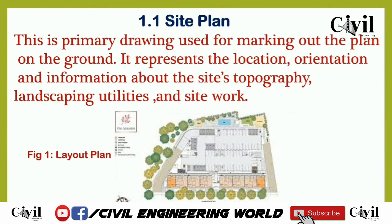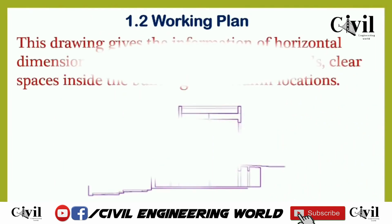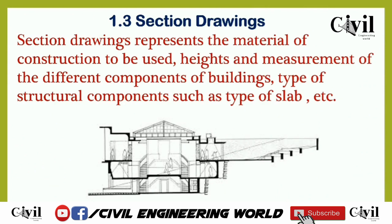There are various sub-types of architectural drawing. The first is the site plan, which is used to represent and locate the project and also gives information about topography and other utilities. The second is the working plan, which gives us the dimensions of buildings, thickness of walls, and also includes clear spacing among building walls and columns.